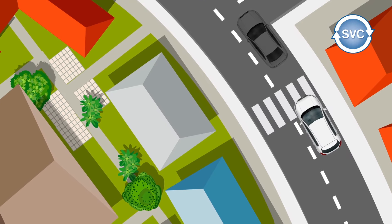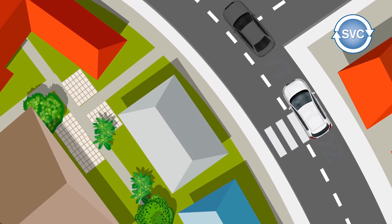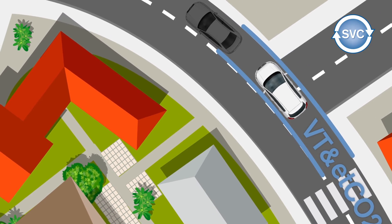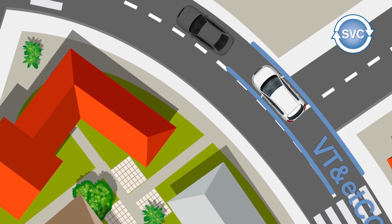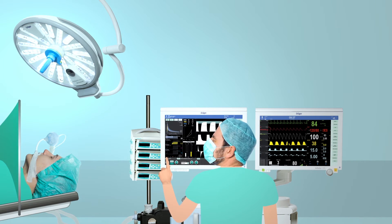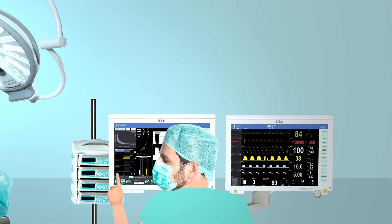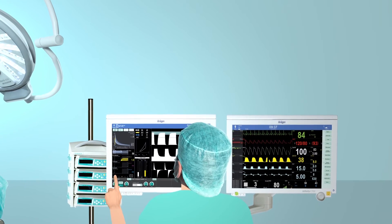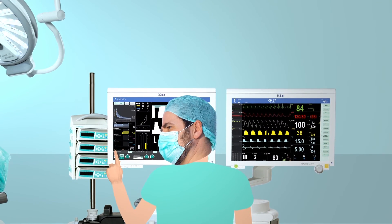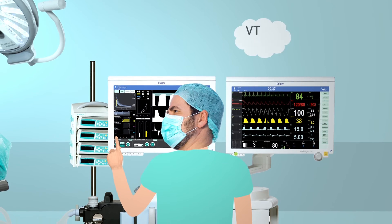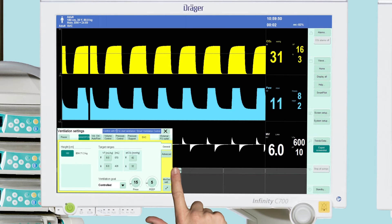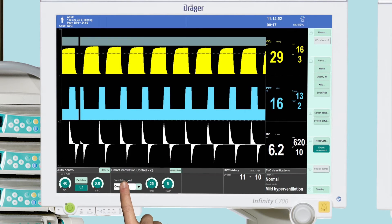How does it work? Similar to a lane assist system, Dr. Miller defines his route — which is the VT and end tidal CO2 target values. The SVC ensures that this route is followed. Clinically, it looks like this: the patient is given a relaxant. Dr. Miller starts Smart Ventilation Control and defines the target areas — end tidal CO2 at 4.3 to 5.7%, and VT at 6 to 9 milliliters. Dr. Miller then chooses smart ventilation control and sets the respiratory goal to controlled ventilation.